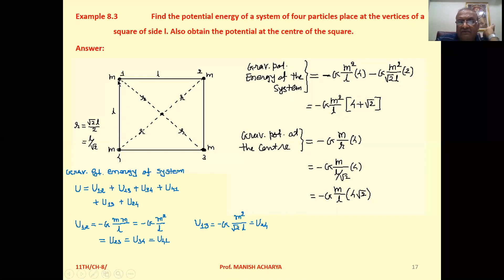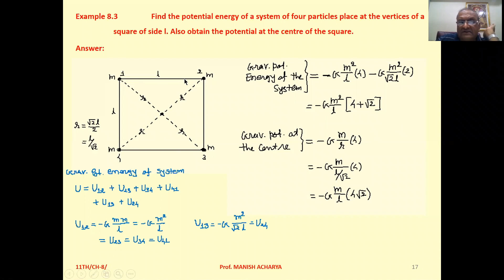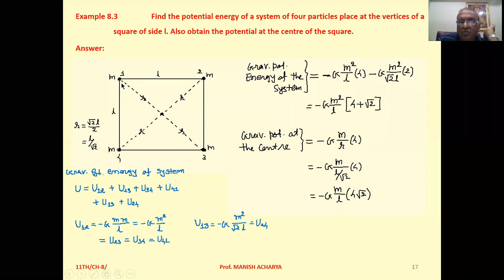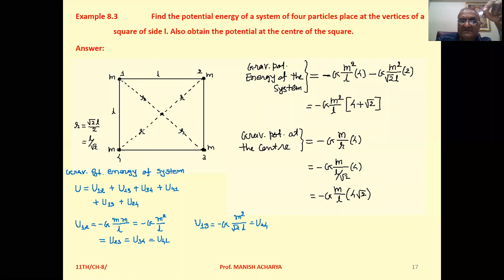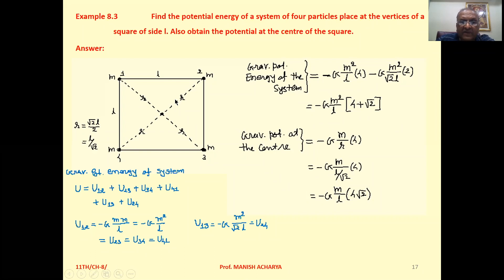For the given system of four particles 1, 2, 3, 4 as shown in the figure, we can prepare the pairs like 1,2, then 2,3, 3,4, 4,1, then 1,3 and 2,4. So the entire system has total 6 pairs.